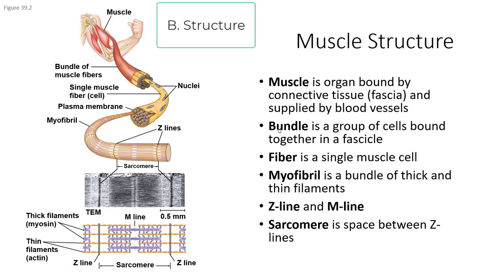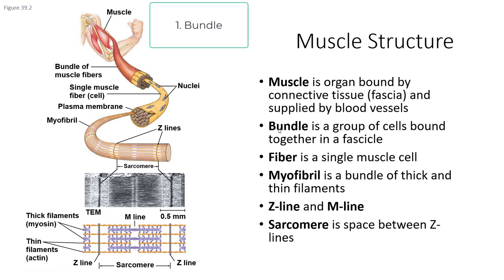Muscles are organs and as such they have a certain structure. The muscle is bound by connective tissue, supplied by blood vessels, and has nervous tissue innervating the individual motor units. A bundle is a group of cells bound together in what is called a fascicle. They are bound together by fascia, which is a type of connective tissue.